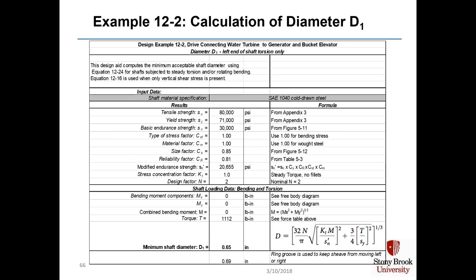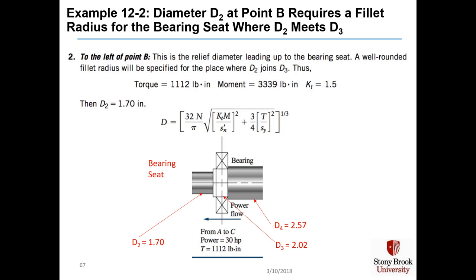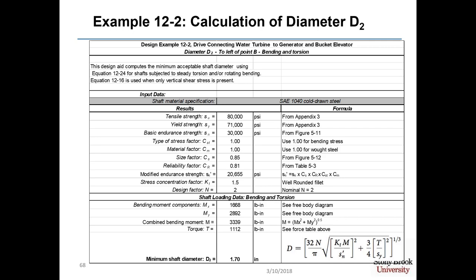The two ring grooves keep shiv A from moving left or right — not due to forces on the shiv, but possibly due to other types of vibration in the shaft. Diameter D2 at point B requires a fillet radius for the bearing seat where D2 meets D3. This location has 1112 pound-inches of torque and a calculated moment of 3339 pound-inches. Because we have a fillet radius, we use KT equal to 1.5, and using equation 12-24, we get D2 equals 1.7 inches.